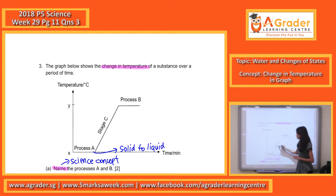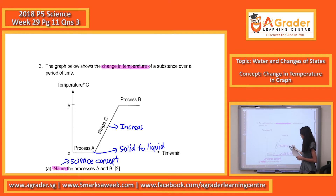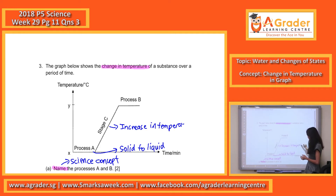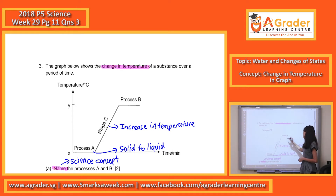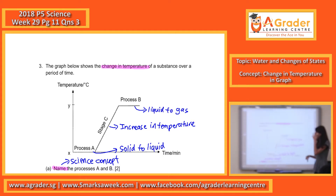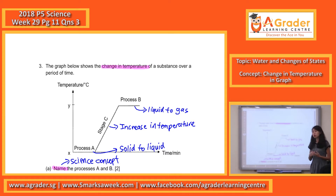What do you notice about stage C? There is an increase in temperature compared to the other two processes. And then process B happens. Process B is definitely from liquid to gas. So just for understanding — process A is from solid to liquid state. Solid to liquid state: the process will always be melting. And from liquid to gas, over here it is being heated.